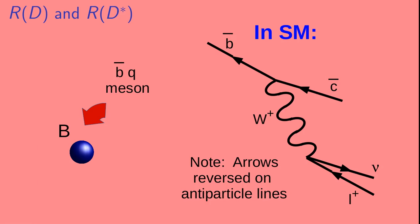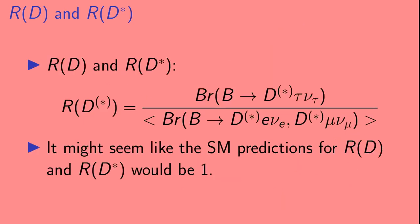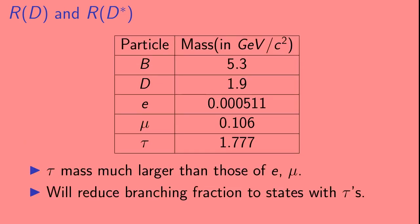Now let's look back at that diagram which mediates these decays that we're interested in in the standard model. In the standard model, the W boson has the same interaction between the three types of leptons, the electron, the muon, and the tau. So, it might seem like the standard model prediction for R(D) and R(D*) would be 1. However, the tau is much heavier than the electron or muon. This will actually reduce the branching fraction to states with taus and make R(D) and R(D*) much less than 1.